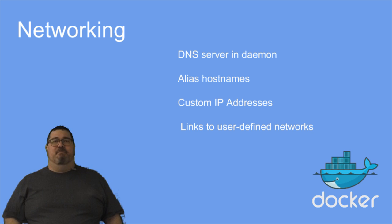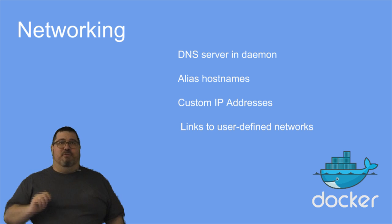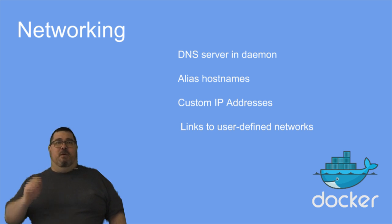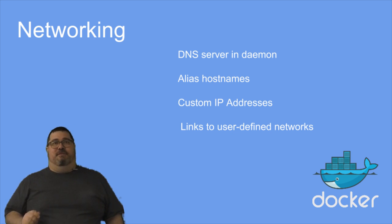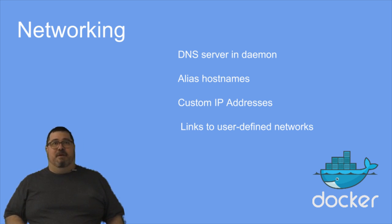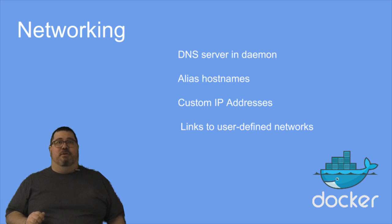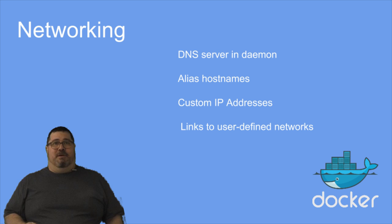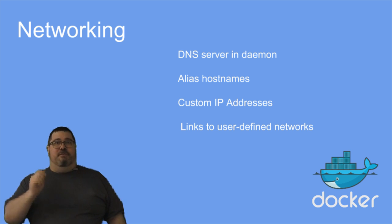Networking is getting even better. As of 1.10, the Docker daemon has an embedded DNS server. Containers running on a user-defined container network will, by default, use the default DNS for built-in service discovery. Links enable users to assign a hostname for a specific container. You can now also give a container multiple hostnames that are accessible across the whole network. We've added support for custom IP addresses to containers in the network, and support for links to user-defined networks to define relationships between containers and aliases for their names.